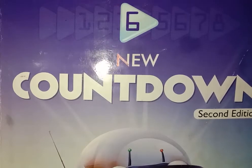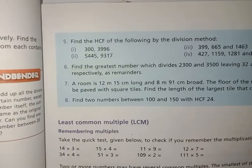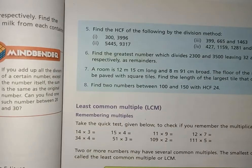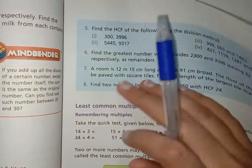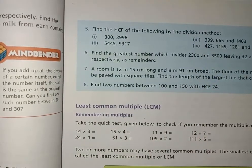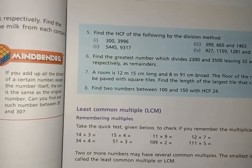Hope you all are fine. Today our book is Six New Countdown Second Edition and today our exercise is 4A. We have done question number one, two, three, four — today we can do question number five. The question number five is: find the HCF of the following by the division method. We have to use the division method for solving this question, so let's start today's lecture.